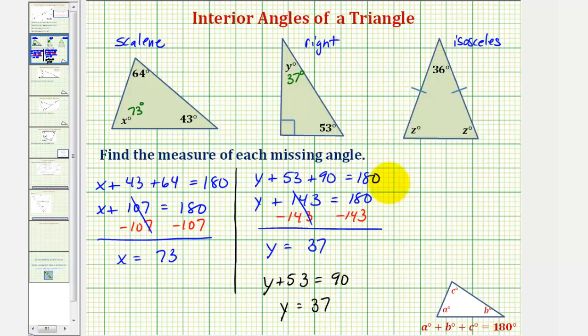And then finally, for our isosceles triangle, our equation would be z plus z plus thirty-six equals one hundred eighty. Z plus z would be two z.